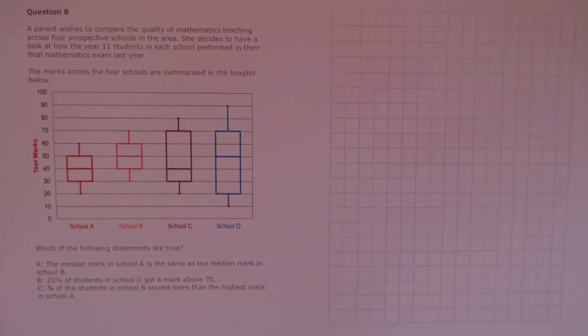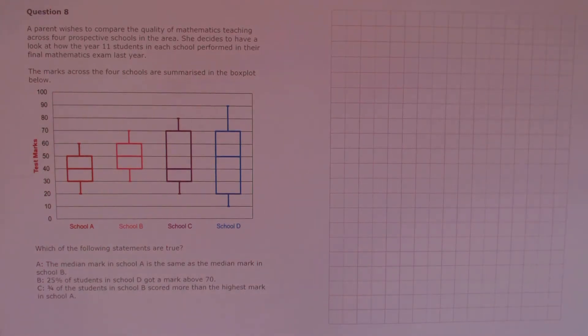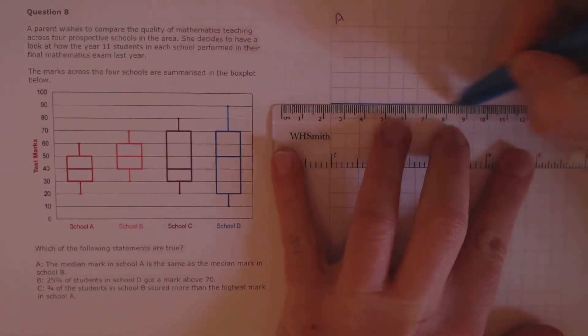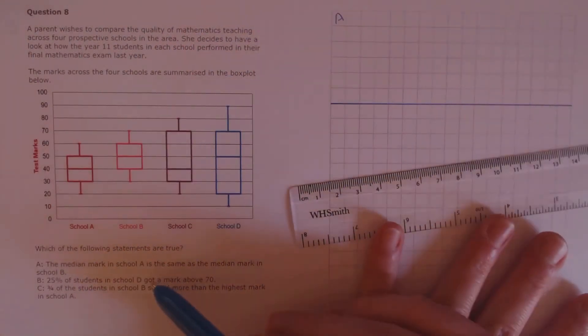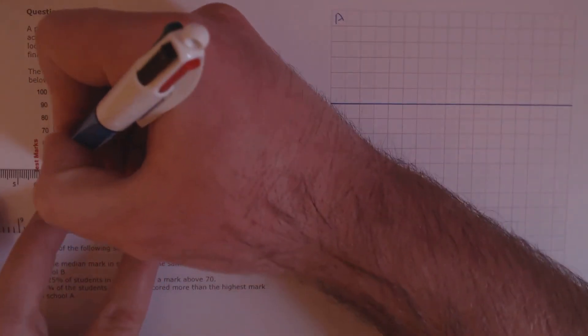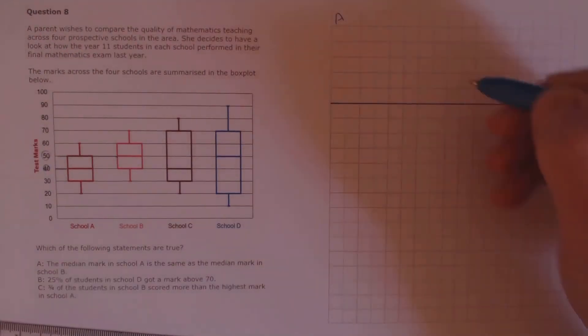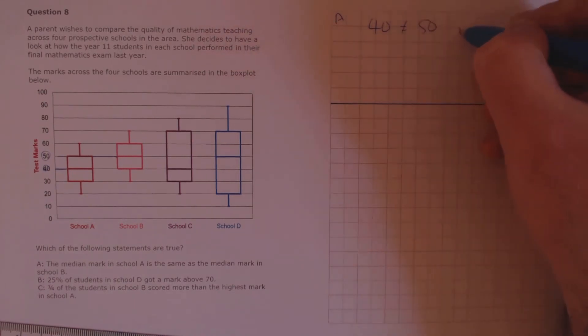Question 8. A parent wishes to compare the quality of mathematics teaching across 4 prospective schools in the area. She looks at how year 7 students in each school performed in their final mathematics exam. The marks across the 4 schools are summarized in the box plot below. Which of the following statements are true? A: the median mark in school A is the same as the median mark in school B. The median mark in school A is 40, and reading off the median for school B gives 50. Since 40 is not equal to 50, that is clearly false.